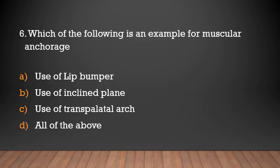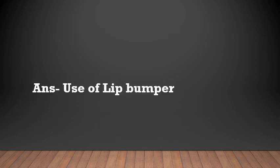Which of the following is an example of muscular anchorage? Use of lip bumper, use of inclined plane, use of transpalatal arch, or all of the above? The answer is use of lip bumper — it is an example of muscular anchorage.